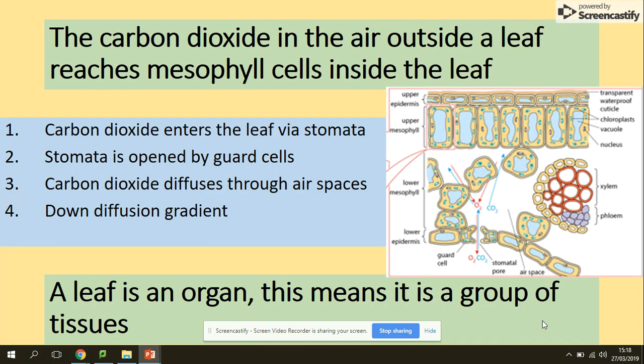The carbon dioxide in the air outside of a leaf will reach the mesophyll cells inside the leaf. How does it take place? Of course it takes place through the stomata. Carbon dioxide enters the leaf through the stomata, they are opened by guard cells. This is your stomata, the guard cells here, they can open stomata. Carbon dioxide diffuses through the air spaces, which we've got here, down a diffusion gradient.